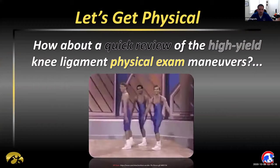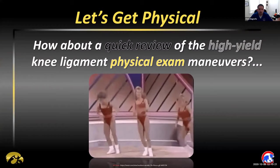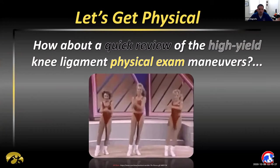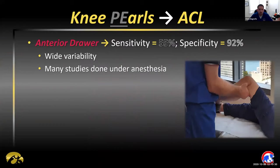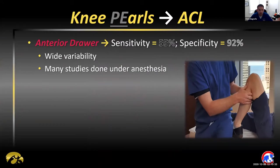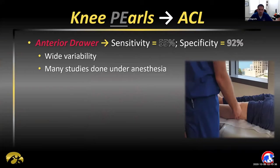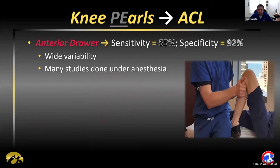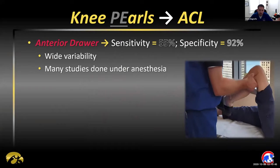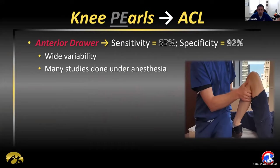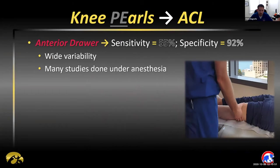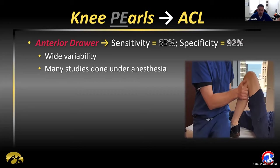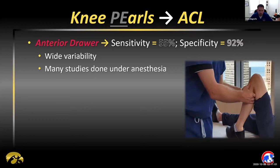On to the physical exam. Let's review some of the pertinent physical exam maneuvers for evaluating the ligament structures of the knee. Everybody has heard of the anterior drawer — sensitivity and specificity vary, but a fair representation is 55% sensitive and 92% specific. Many of these knee maneuvers are studied under anesthesia, so in the practical world — evaluating athletes on the sideline, in the clinic, or emergency department — the results may not hold quite the same. Take it with a grain of salt.